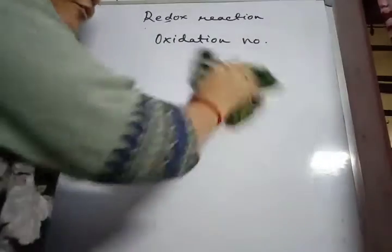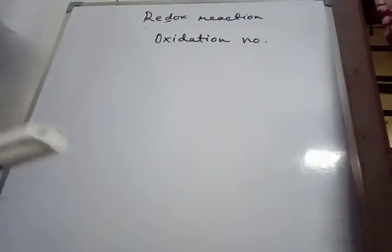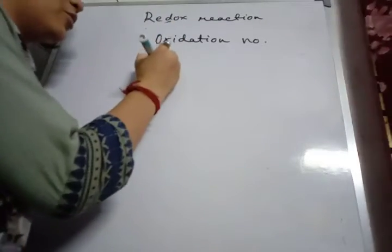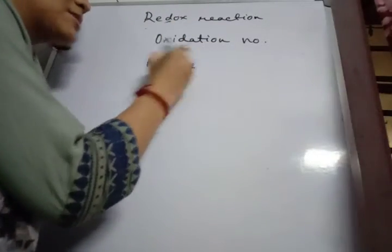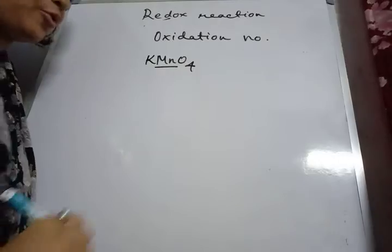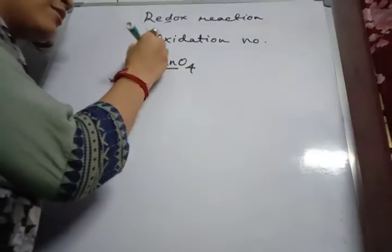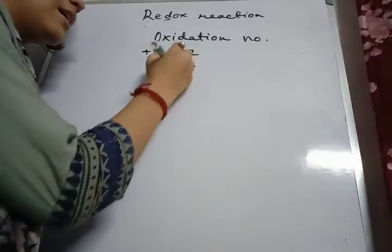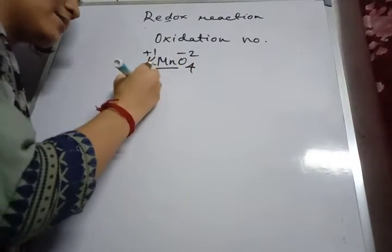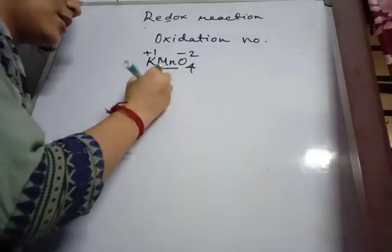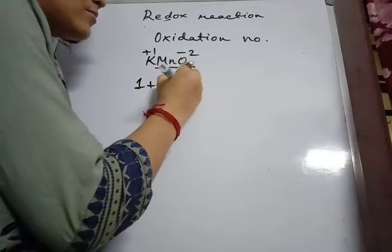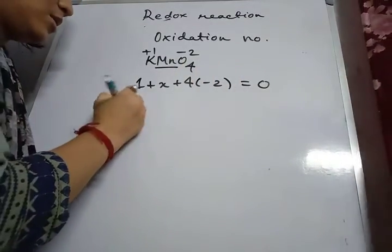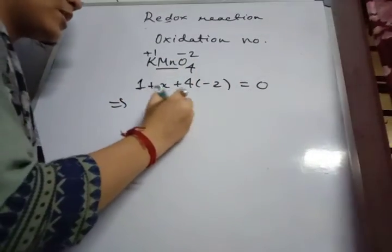Let's do a few examples. Calculate the oxidation number of Mn in KMnO4. K is plus one, oxygen is minus two, and let the oxidation number of Mn be X. So we write: 1 + X + 4×(−2) = 0, since it is a neutral compound. Therefore X equals plus seven.